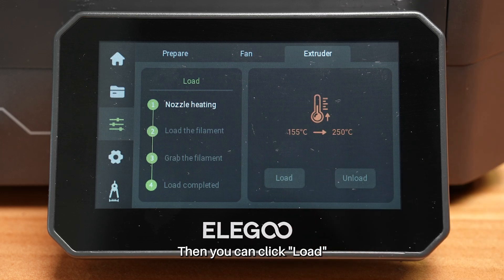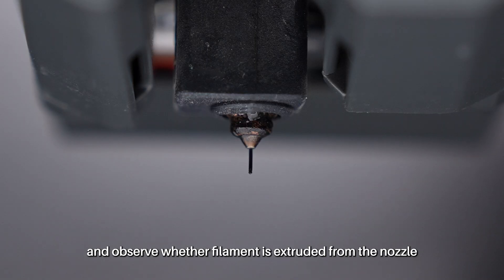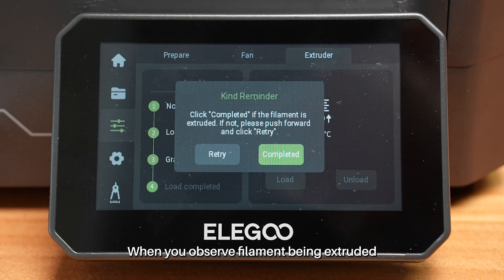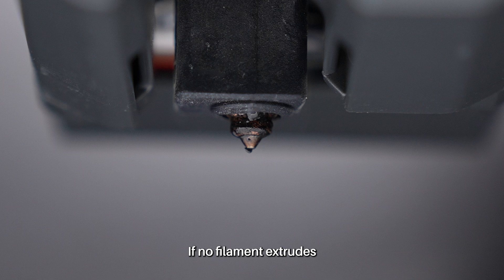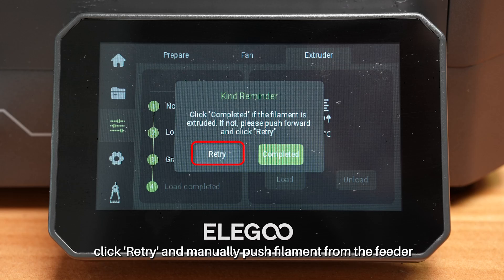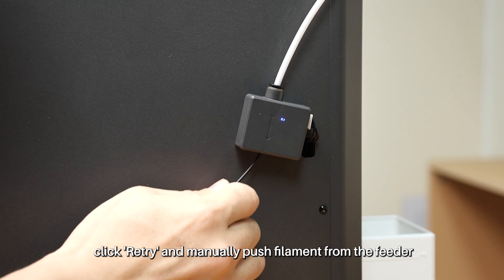Then, you can click load and observe whether filament is extruded from the nozzle. When you observe filament being extruded, click completed. If no filament extrudes, click retry and manually push filament from the feeder.